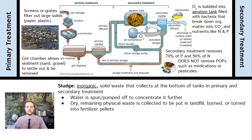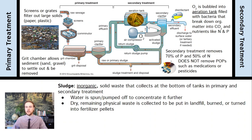Sludge is the inorganic solid waste that builds up in the bottom of these grit chambers, and there are usually secondary sludge collectors as well. It's collected, spun, and dried so that most of the water weight is removed, leaving just the dry inorganic waste. Then it's either taken to a landfill, incinerated, or turned into fertilizer pellets. The key is we don't want to send it into secondary treatment because it's inorganic and the microbes will not break it down.